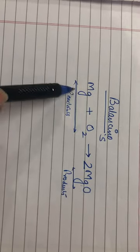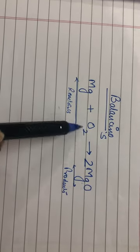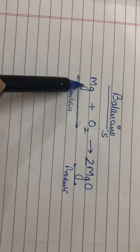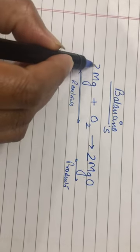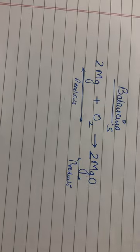Overall in the equation, now oxygen gets balanced but magnesium atoms become different. So in order to make magnesium also balanced, we will have to add a coefficient 2 here.